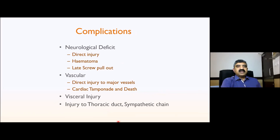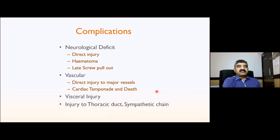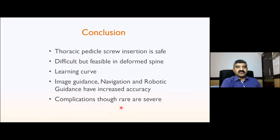Complications of thoracic pedicle screw insertion include: direct injury to the cord, hematoma from fracturing the medial wall, lateral screw pullout, vascular injuries — direct injury to major vessels such as the aorta and IVC on the side of the thoracic vertebra — some patients have even died on the table. Visceral injury is quite rare; pleural and lung injury, and injury to the thoracic duct in deformed or tubercular spine are also known.